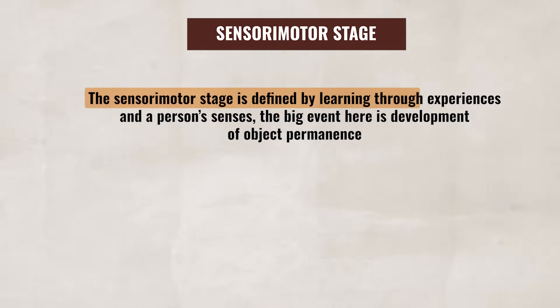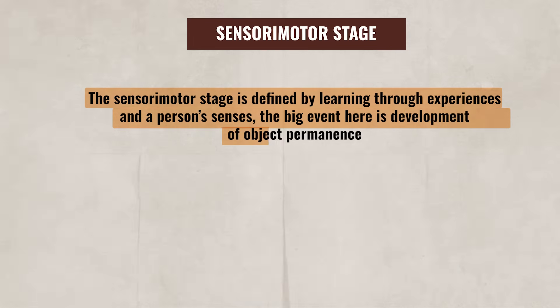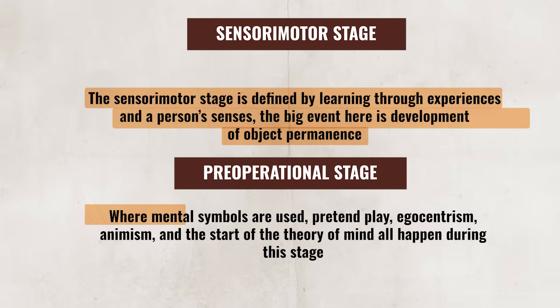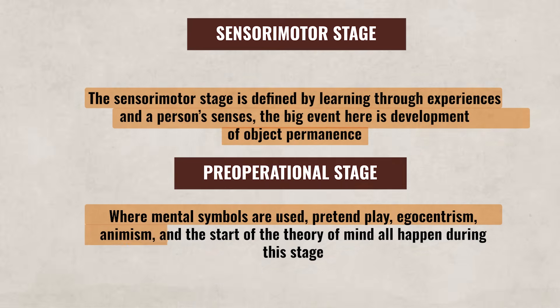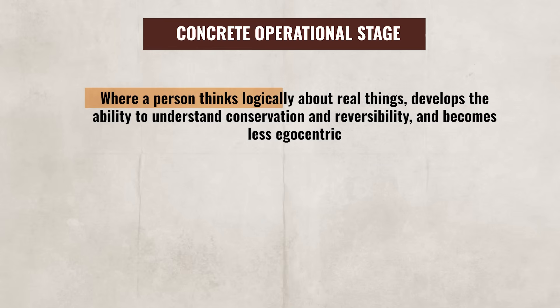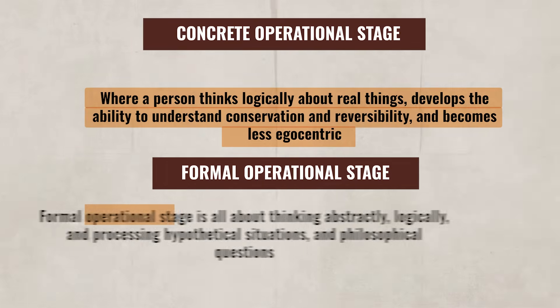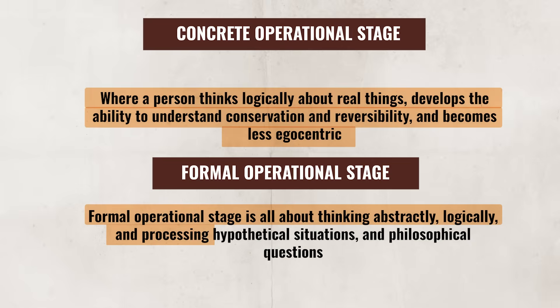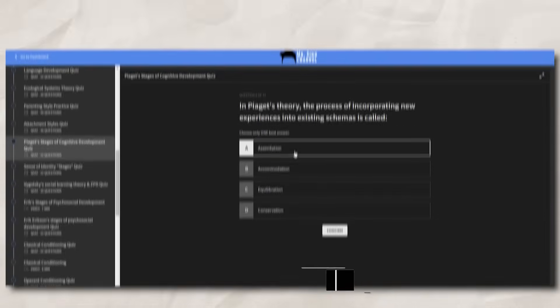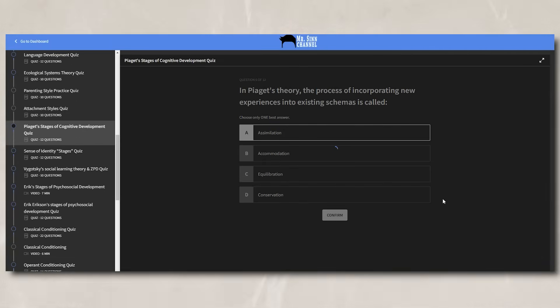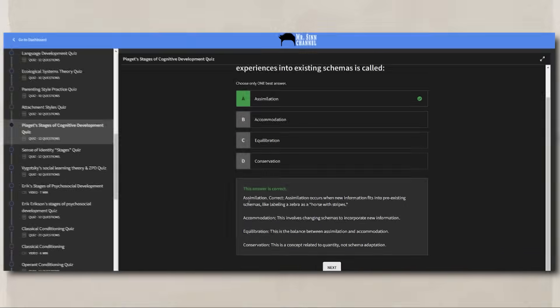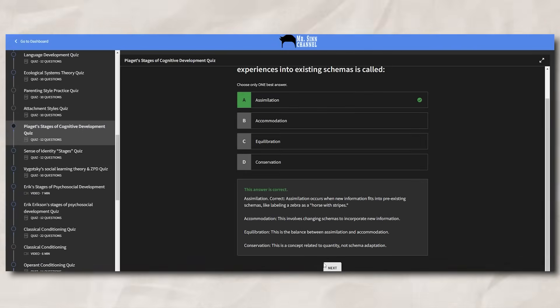To recap Piaget's four stages: the sensorimotor stage is defined by learning through experiences and senses, with object permanence as the big development. The pre-operational stage involves mental symbols, pretend play, egocentrism, animism, and the start of theory of mind. The concrete operational stage is when a person thinks logically about real things and develops conservation and reversibility. The formal operational stage is all about abstract thinking, logic, and processing hypothetical and philosophical questions. If you need more help, check out the practice quiz inside my Ultimate Review Packet, with explanations for every answer.